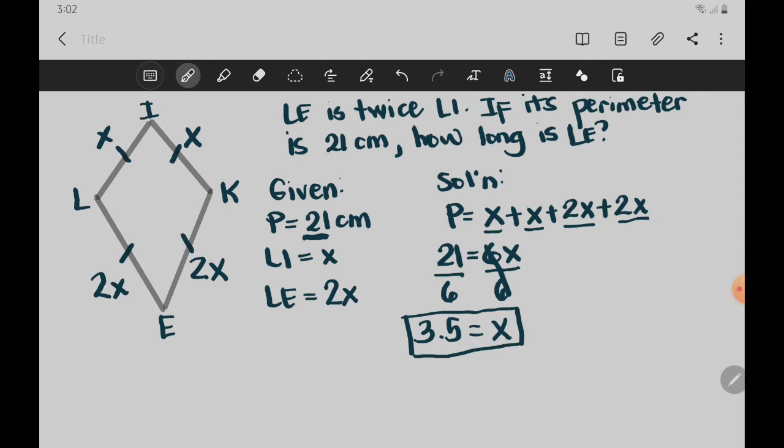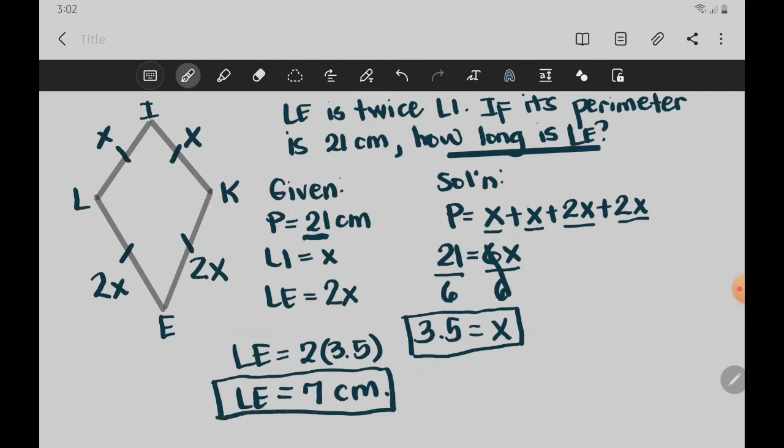Now let us proceed with the question. How long is LE? Since we are looking for the measure of LE, the given here is 2X, so we just replace X with 3.5. And then multiply 2 times 3.5, we have here LE is 7 centimeters. So our answer is 7 centimeters.